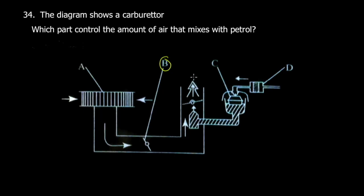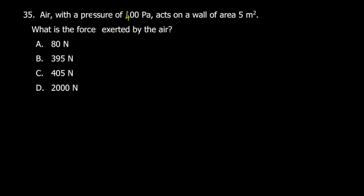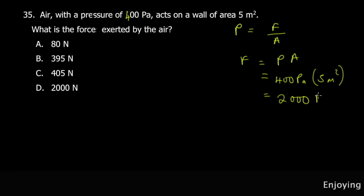Let's move to the next question. Air with pressure of 400 pascals acts on a wall of five square meters. What's the force exerted by the air? From primary school, we knew that pressure equals force divided by area. So force equals pressure multiplied by area. Pressure is 400 pascals and area is 5 square meters. When you multiply these, you get 2000 newtons.